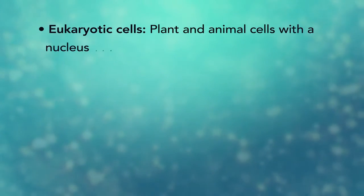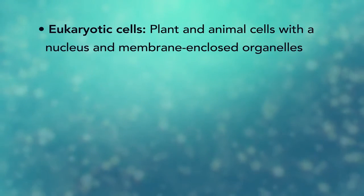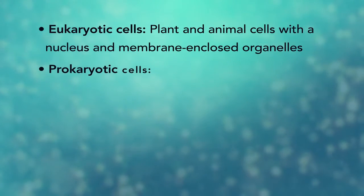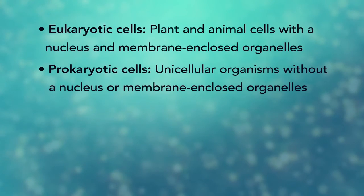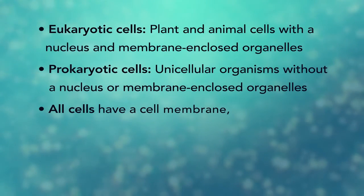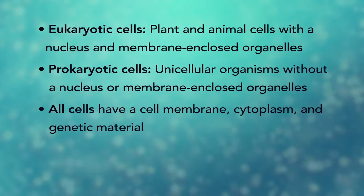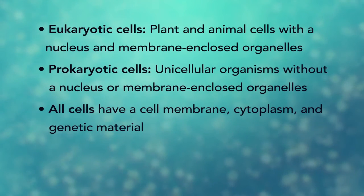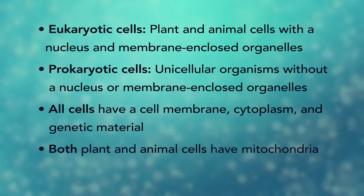In summary, eukaryotic cells are plant and animal cells with a nucleus and membrane-enclosed organelles, while prokaryotic cells are unicellular organisms without these things. All cells have a cell membrane, cytoplasm, and genetic material. And even though only plant cells have chloroplasts, both plant and animal cells have mitochondria.